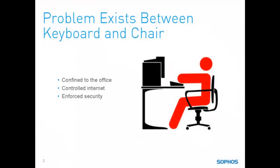We're all familiar with this concept. The problem exists between the keyboard and chair — essentially, users can't be trusted, and IT admins have put policies and restrictions in place to keep them under control. This wasn't always easy, but it was helped by the fact that the user operated on a managed network and normally inside an office.